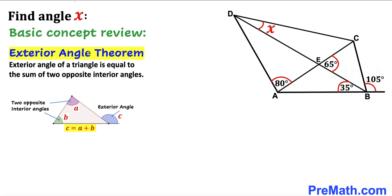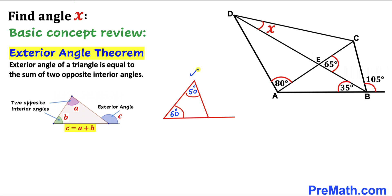Let's recall the exterior angle theorem. The exterior angle of a triangle is equal to the sum of the two opposite interior angles. In this diagram, angle C is our exterior angle whereas angles A and B are our opposite interior angles, such that angle C equals A plus B. For example, if the two opposite interior angles are 50 and 60 degrees, the exterior angle equals 110 degrees.